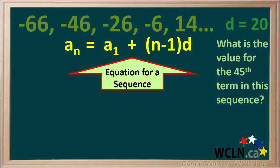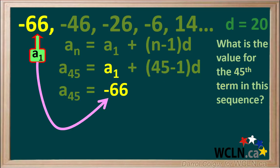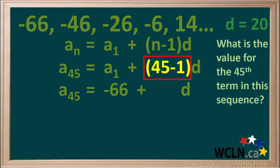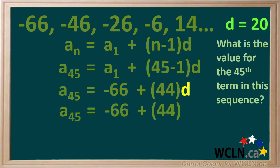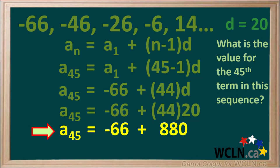The general equation for an arithmetic sequence is an equals a1 plus n minus 1 times d. We're looking for the 45th term, so n equals 45 and n minus 1 is 45 minus 1. The value for term a1 is negative 66, so we substitute that in. 45 minus 1 equals 44, and the common difference d equals 20. So our equation becomes a45 equals negative 66 plus 44 times 20. 44 times 20 equals 880, giving us a45 equals negative 66 plus 880.